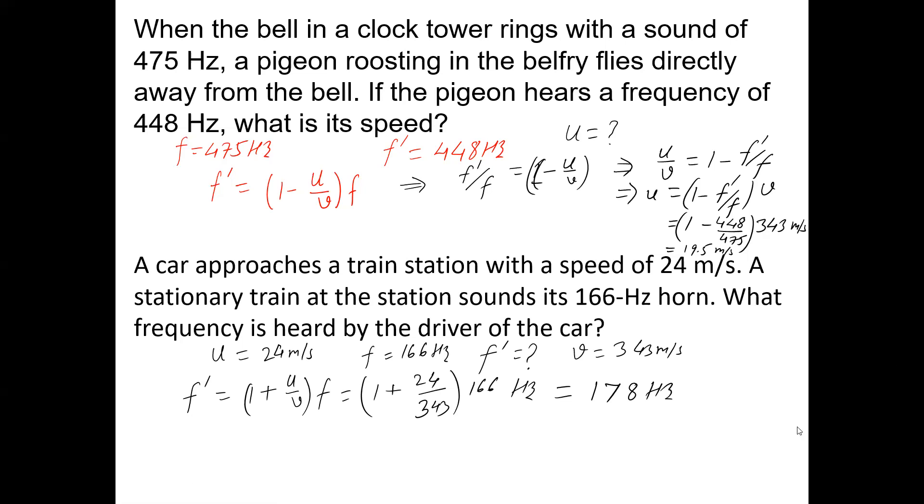So now this one is greater than the source frequency because the driver is coming towards the train. By looking at these two equations, two problems, we can understand if two sources - source and listener - source and listener coming together, then listener will hear higher frequency. But if they are going apart, if relative motion is longer, it means they are going apart. If they are not approaching, they are separating, then frequency heard by the listener is less.